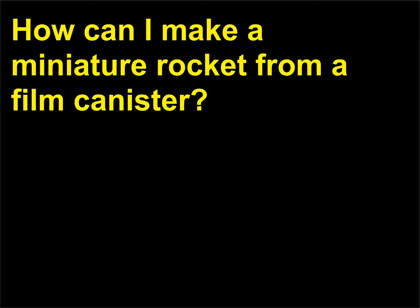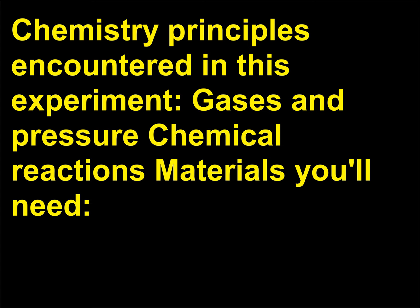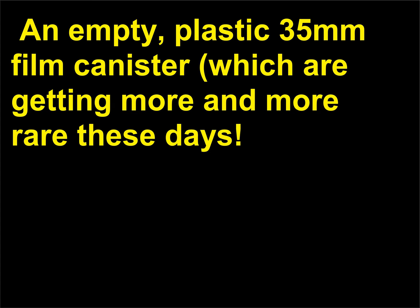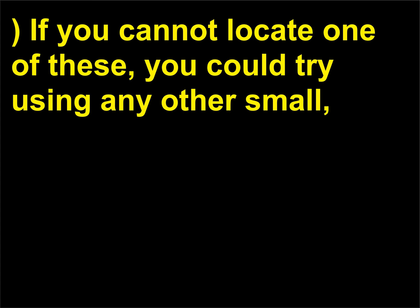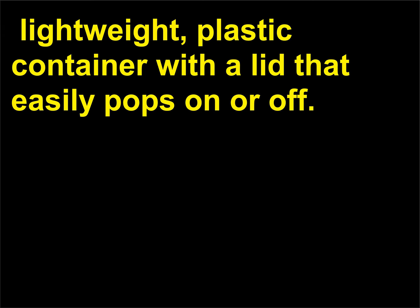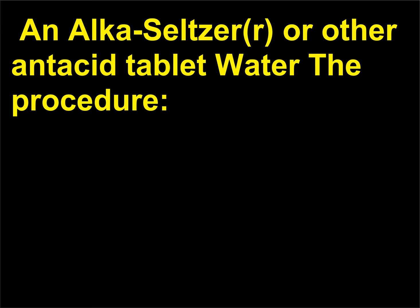How can I make a miniature rocket from a film canister? Chemistry principles encountered in this experiment: gases and pressure, chemical reactions. Materials you'll need: an empty plastic 35mm film canister, which are getting more and more rare these days. If you cannot locate one of these, you could try using any other small, lightweight, plastic container with a lid that easily pops on or off. An Alka-Seltzer or other antacid tablet, and water.